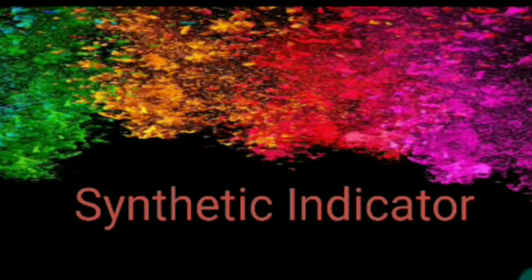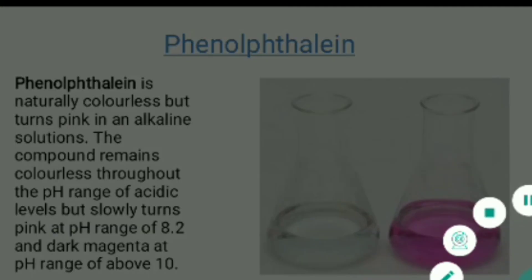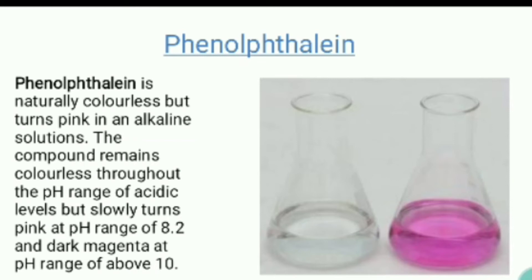Next we move to synthetic indicators — these are the indicators prepared in labs. The most common synthetic indicator we will talk about is phenolphthalein. Phenolphthalein is a naturally colorless indicator prepared in labs, so it is a form of synthetic indicator. It remains colorless when in contact with acid, but it turns pink in an alkaline solution. This question is very important — it is often asked in MCQs: if a solution turns an indicator pink in base, which indicator is it? The answer is phenolphthalein.